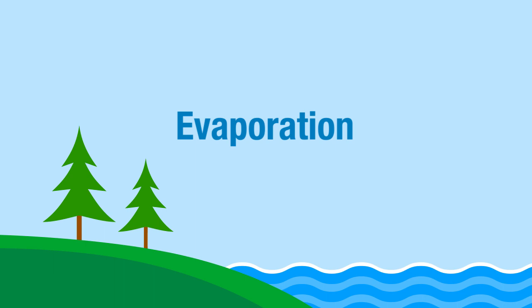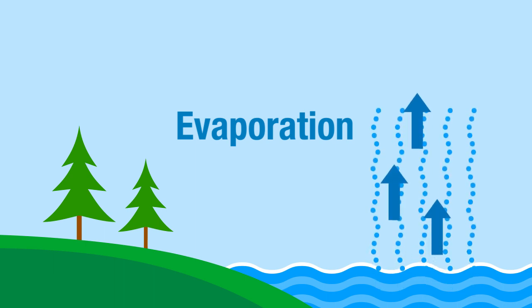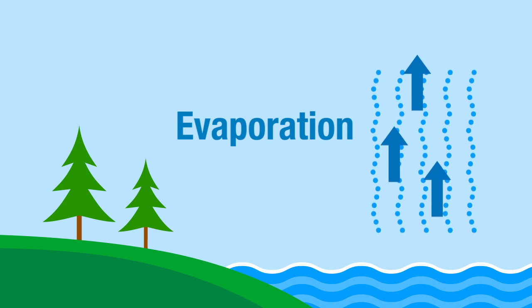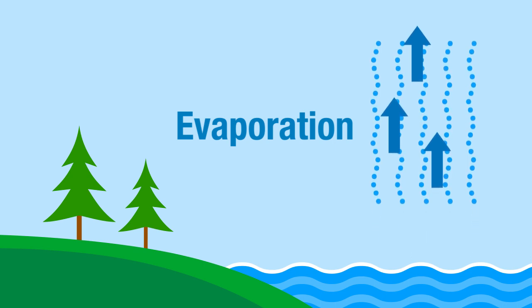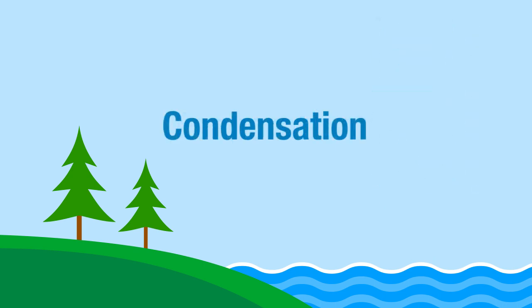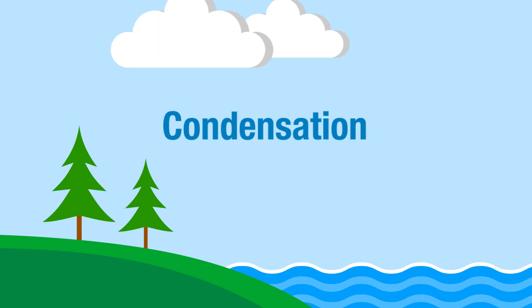Evaporation is the process by which water changes from a liquid to a gas or vapor. Evaporation is the primary pathway that water moves from the liquid state back into the water cycle as atmospheric water vapor. Condensation is the process by which water vapor in the air is changed into liquid water. Condensation is crucial to the water cycle because it is responsible for the formation of clouds.